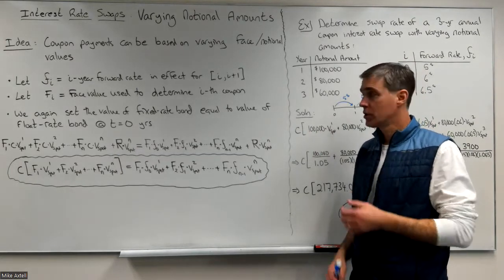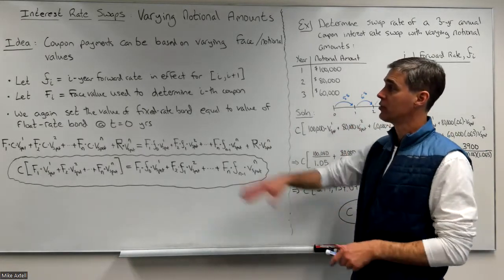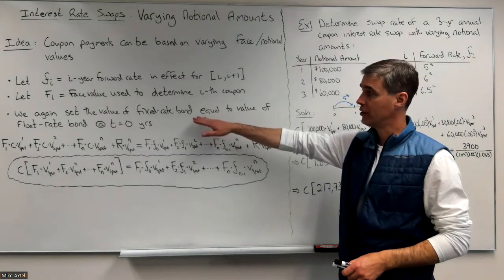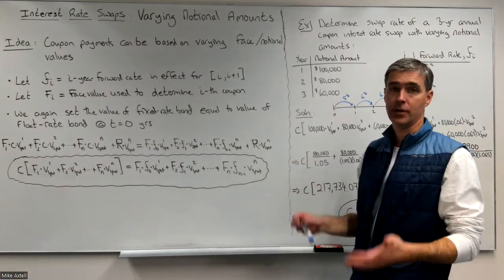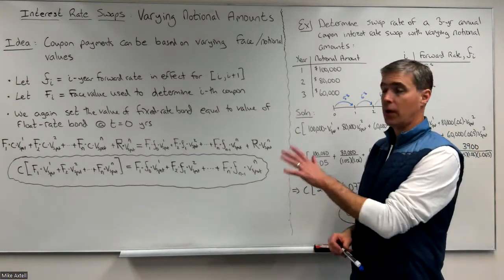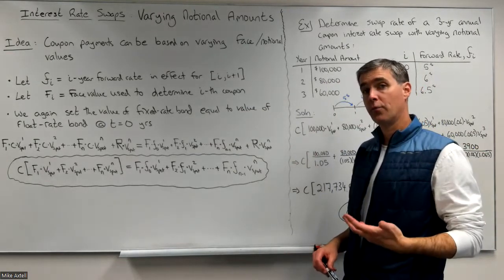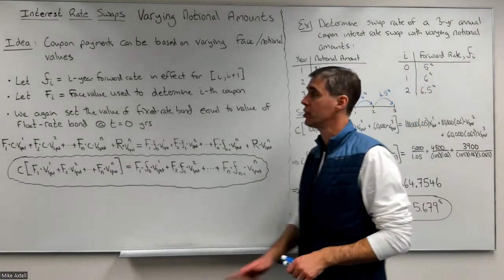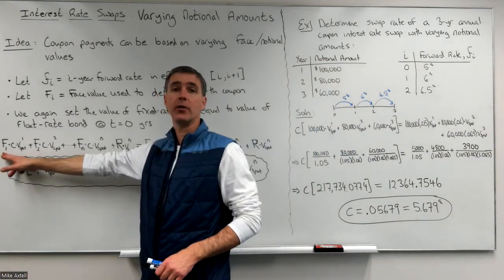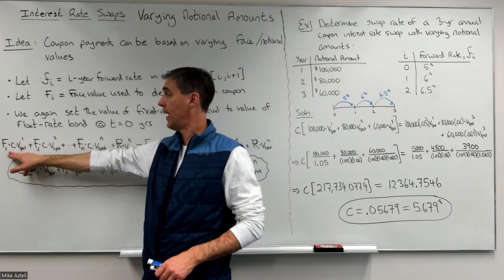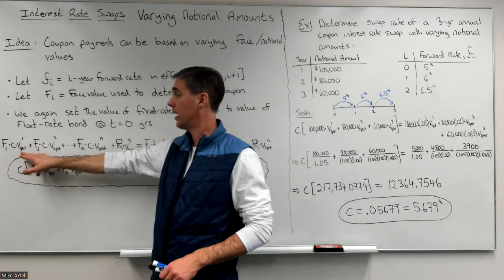To figure out the swap rate, we're going to do what we pretty much always do. We're going to set the fixed rate bond value or price equal to the value or price of the floating rate bond at time zero. On the left, I've got the price of the fixed rate bond using the swap rate C as the coupon rate. Coupon rate C times the notional amount used for the first coupon capital F sub one gives the dollar amount of the first coupon, F1 times C, dragged back one year.